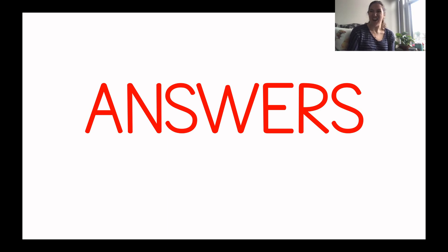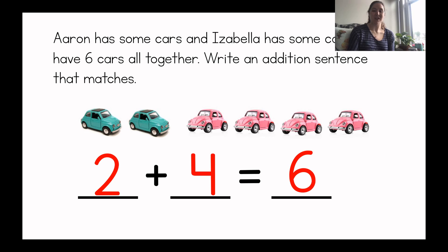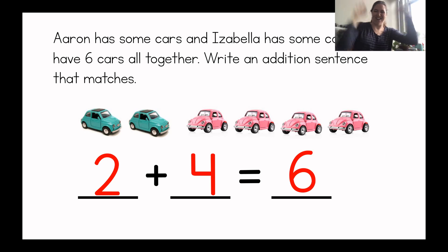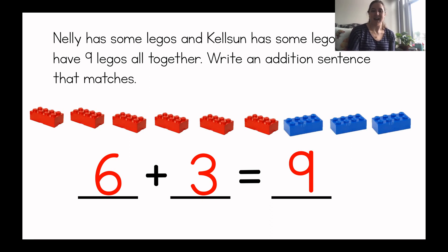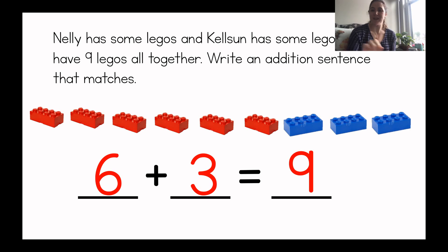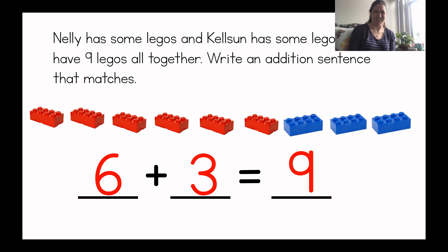Okay, here are our answers to our You Do problems. For the cars, you should have had 2 plus 4 equals 6, because there were 2 blue cars that Aaron had and 4 pink cars that Isabella had, equals 6 cars all together. Did you get that? Hooray for you if you did. 2 plus 4 equals 6. And then for the other one, Nellie had 6 Legos and Kelson had 3 Legos, and that equaled 9 Legos all together. So you should have had 6 plus 3 equals 9. Did you get that one? Great job, kindergartners.